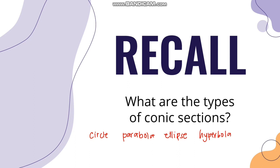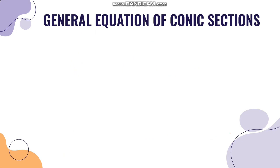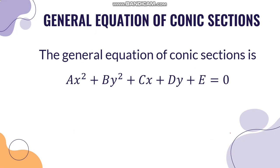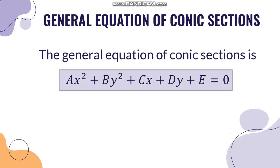Each of these four conic sections has their own standard form of equation, which is what we discussed before. Now what we will have is the general equation of these conic sections. The general equation of conic sections is given by AX squared plus BY squared plus CX plus DY plus E equals 0.